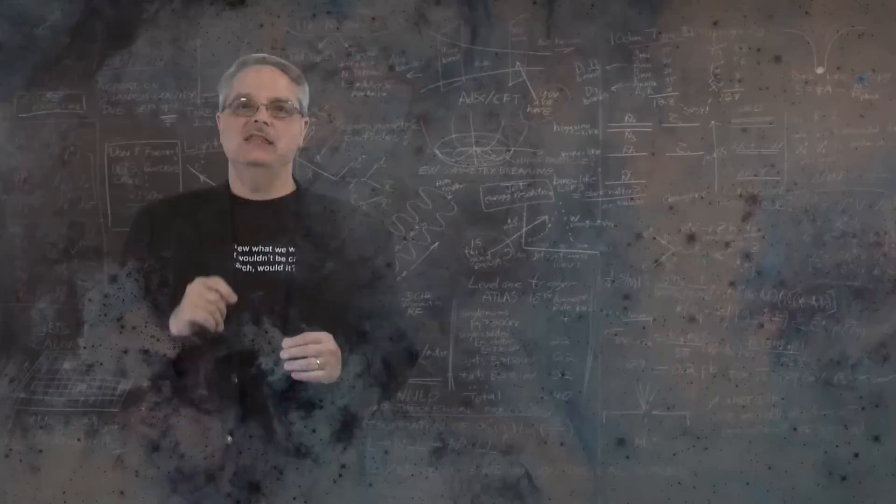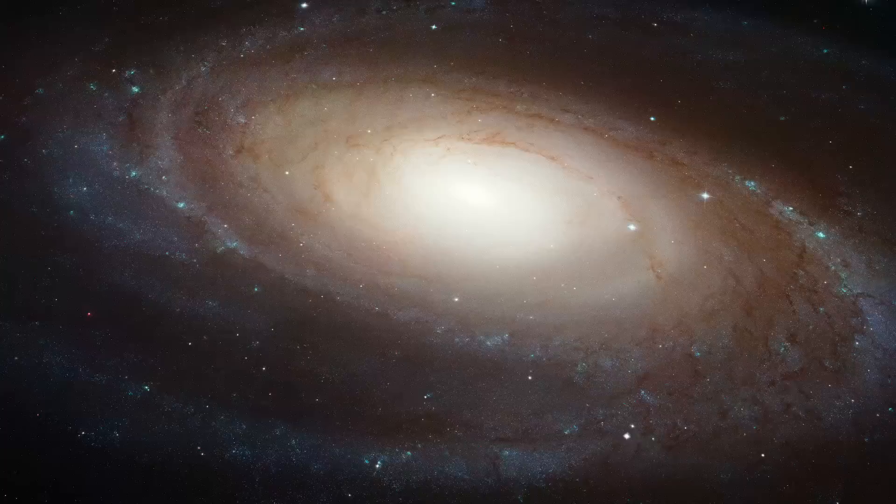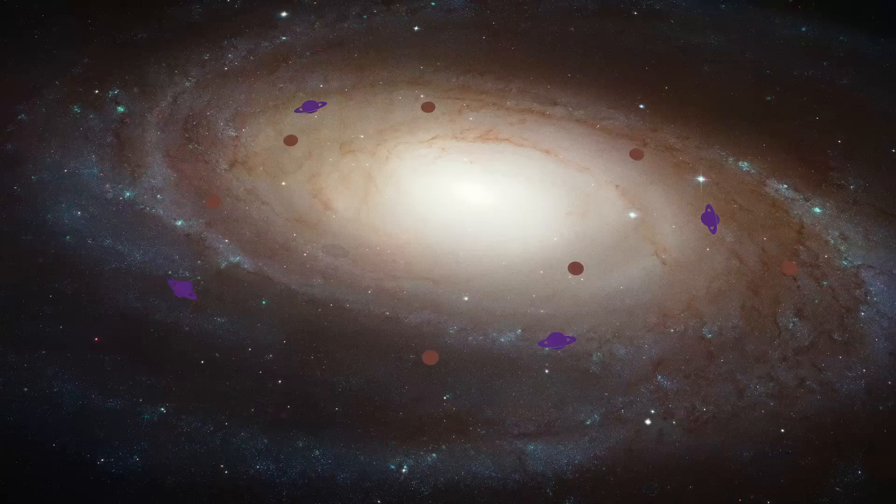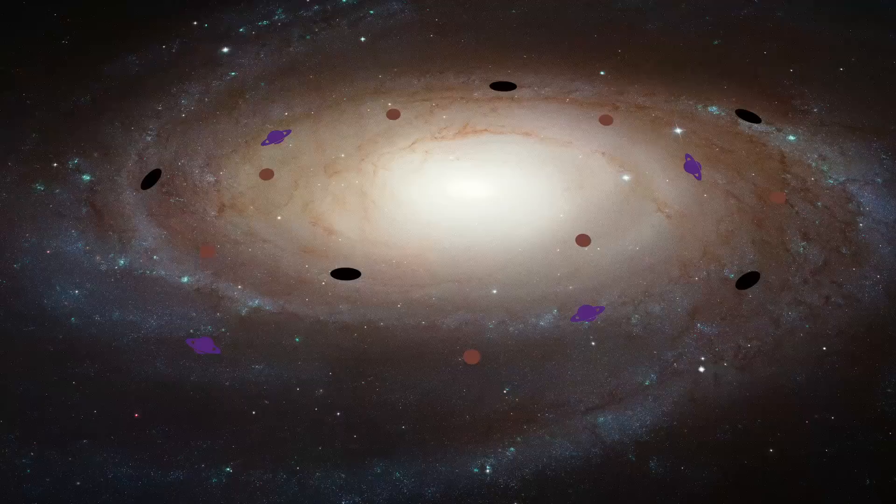In the past, before the scientific community settled on the dark matter hypothesis, astronomers looked for other explanations for why galaxies rotate so fast. The simplest hypothesis was that rogue planets, brown dwarfs, black holes, and similar dense bodies of ordinary matter were to be found in the Milky Way. The idea was that scientists had simply underestimated the amount of matter in the galaxy.